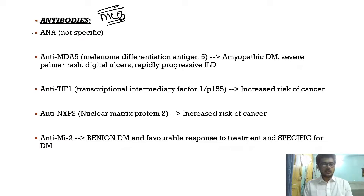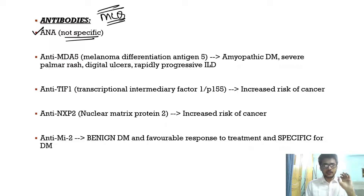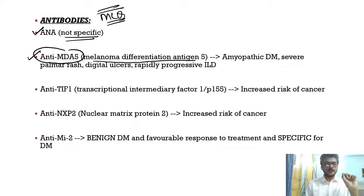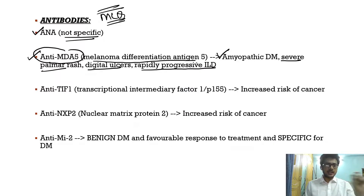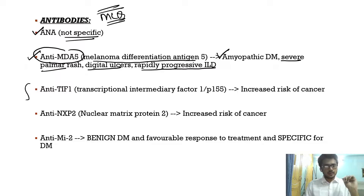The antibodies seen in dermatomyositis are very important. Anti-nuclear antibodies are non-specifically raised and are not specific. Anti-MDA5 (melanoma differentiation antigen 5) positivity means the patient will have more dermatological than neurological manifestations, can have amyopathic dermatomyositis, a severe palmar rash, digital ulcers, and rapidly progressive interstitial lung disease.